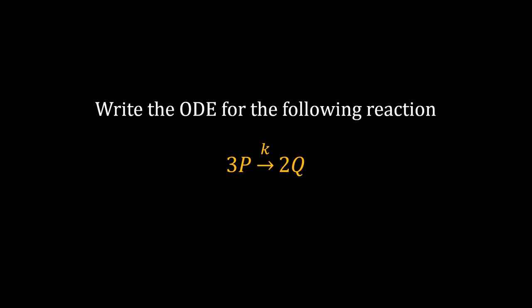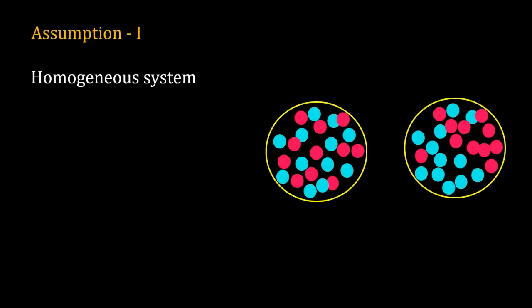Every ODE-based model has two assumptions. I will now discuss those assumptions. Our first assumption is that the system is homogeneous. Suppose in a cell we have red colored molecules and blue colored molecules. In this cell, all the molecules are well mixed, so the concentration of the molecules does not depend upon the location inside the cell.